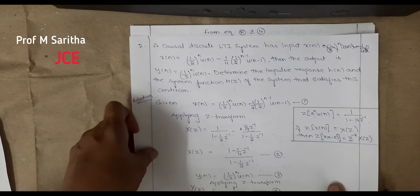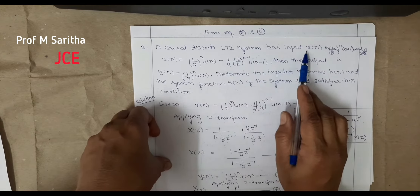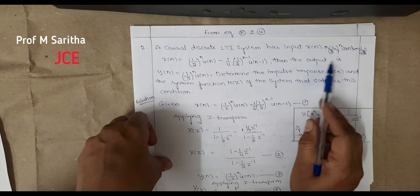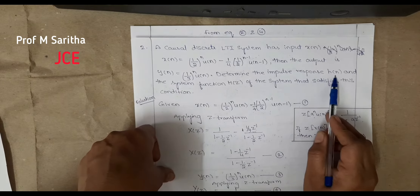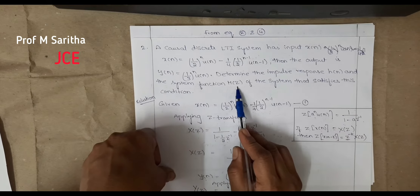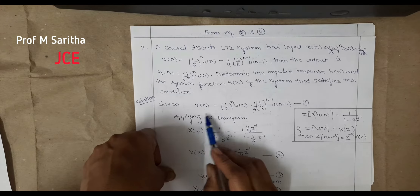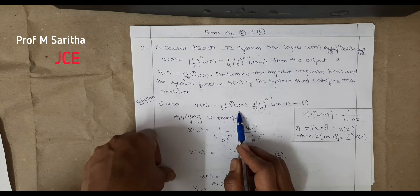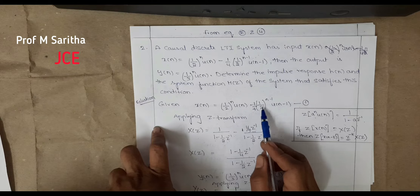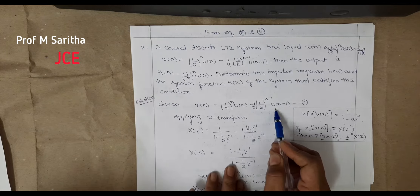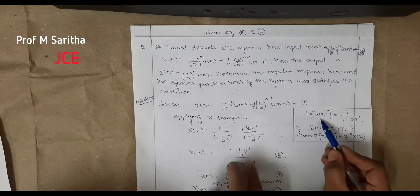Problem 2: A causal discrete LTI system has input x(n) and output y(n) = (1/3)^n u(n). Determine the impulse response h(n) and the system function H(z). Given: x(n) = (1/2)^n u(n) − (1/4)(1/2)^(n−1) u(n−1). Let us take this as equation 1.